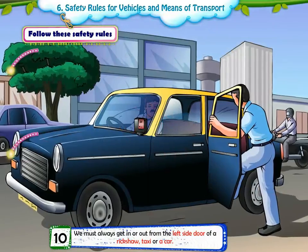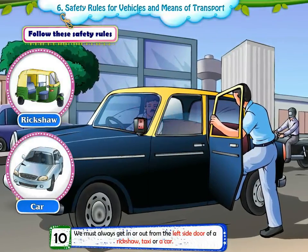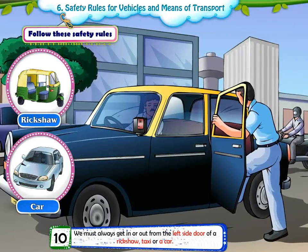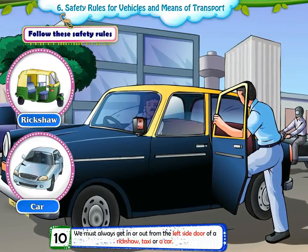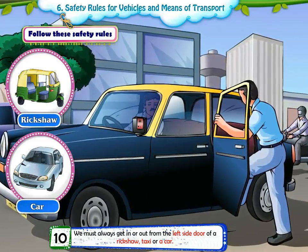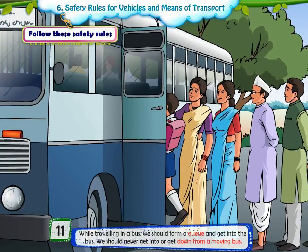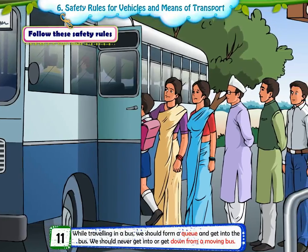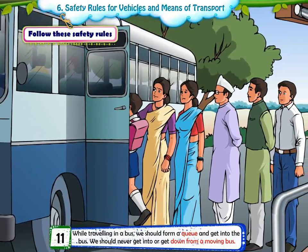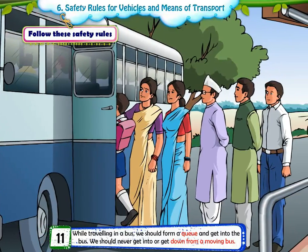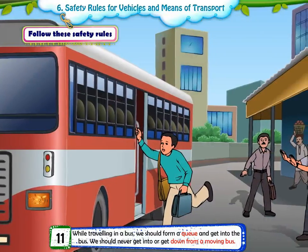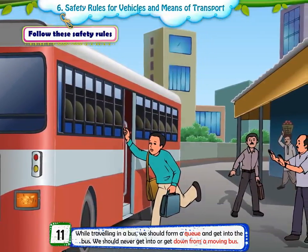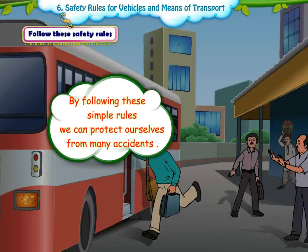10. We must always get in or out from the left side door of a rickshaw, taxi or a car. 11. While travelling in a bus, we should form a queue and get into the bus. We should never get into or get down from a moving bus. By following these simple rules, we can protect ourselves from many accidents.